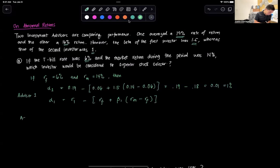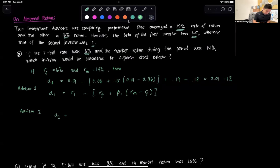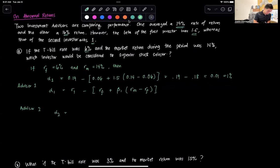For advisor 2, alpha 2 is equal to, following the same sort of format, the return of the other investor was 0.16, minus the risk-free rate 0.06, plus the beta of the second investor, which is 1, times that return 0.14...